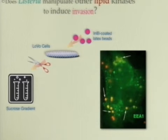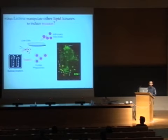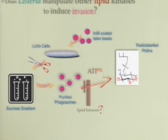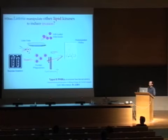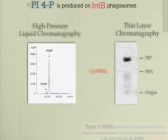We internalized these beads in a colon epithelial cell line, Caco-2 cells, and after subcellular fractionation in a sucrose gradient, we were able to purify a fraction of phagosomes containing these beads. Our question was: are there specific lipid kinases present at the surface of these compartments? In order to answer this question, we incubated these phagosomes with radiolabeled ATP, and then we monitored by thin layer chromatography the production of radiolabeled phosphoinositides. This work let us demonstrate that a family of type 2 PI4 kinases is present in this compartment and is required for bacterial invasion. We were able to show that at the surface of this compartment there is an important production of PIP, and by HPLC we were able to show that this fraction corresponds to a phosphoinositide known as PI4P.